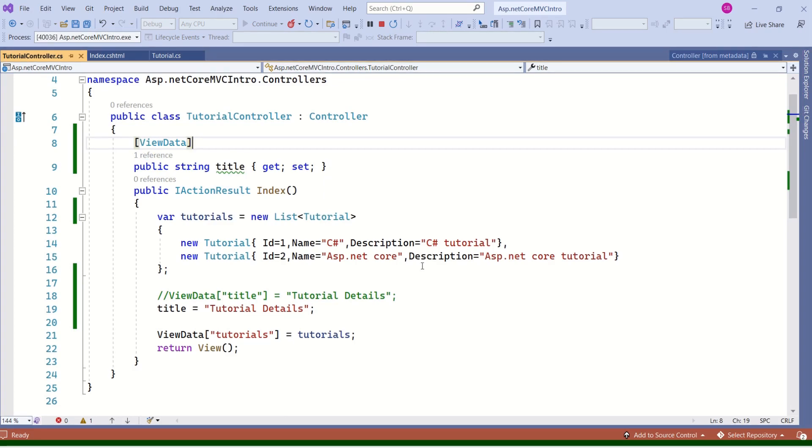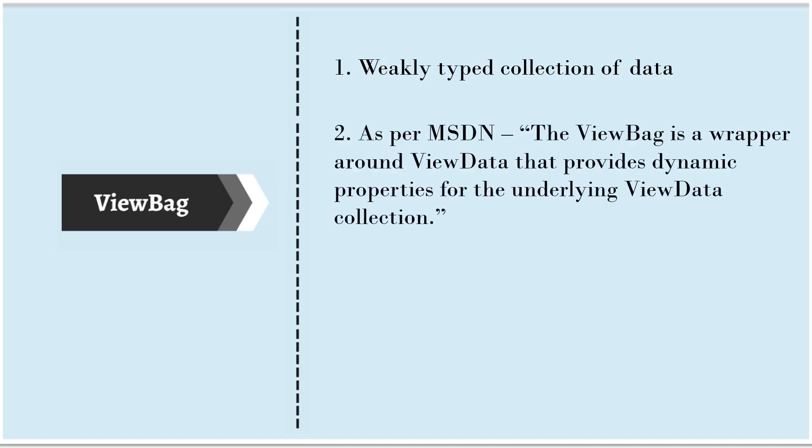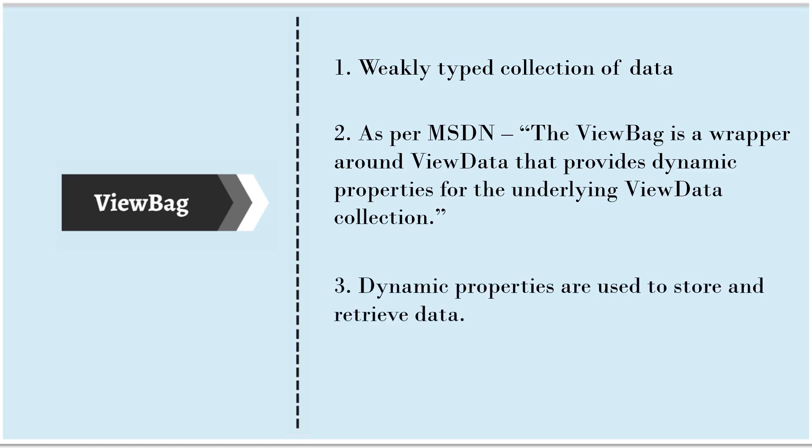Shall we move to the next option — ViewBag. First, let's understand a few facts. ViewBag is a weakly typed collection of data. As per MSDN, ViewBag is a wrapper around ViewData that provides dynamic properties for the underlying ViewData collection. Another important thing is that dynamic properties are used to store and retrieve data. We will work with an example and you will understand all these points.